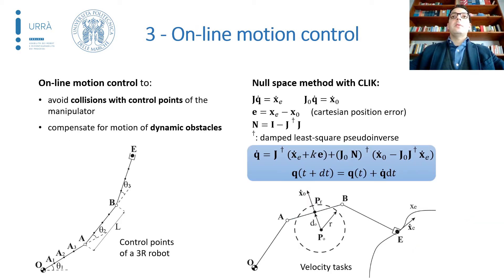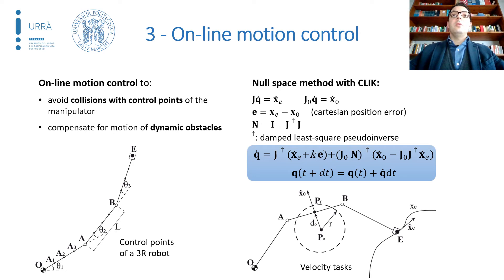The motion control is based on a null space method combined with a closed-loop inverse kinematics method. Besides the velocity assigned to the end effector, a null space joint speed is imposed by assigning an additional repulsive velocity to the most critical control point — that is, the point along the kinematic chain of the robot closest to one of the obstacles. A dampened least-squares pseudo-inverse method is used to avoid singular configurations during the motion, and a compensation term for the drift of the position error is added.